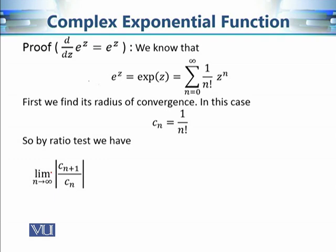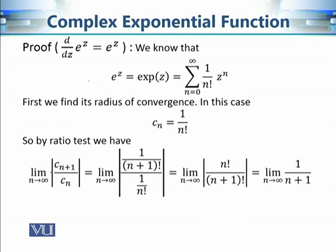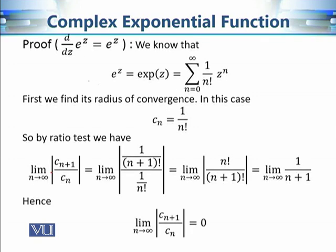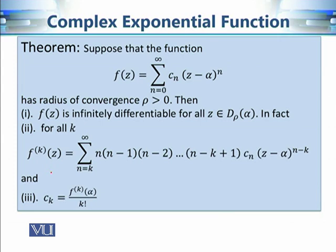We calculate the limit as n → ∞ of |cₙ₊₁/cₙ| = |1/(n+1)! · n!| = 1/(n+1), which approaches 0 as n → ∞. Since 0 < 1, by D'Alembert's ratio test the series is absolutely convergent for every complex number z — there is no condition on z — and thus the radius of convergence is infinity.